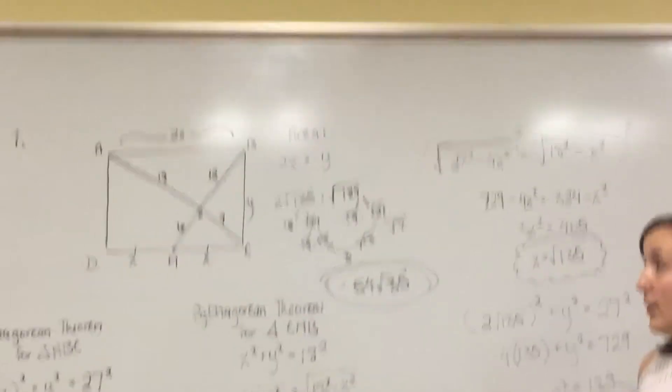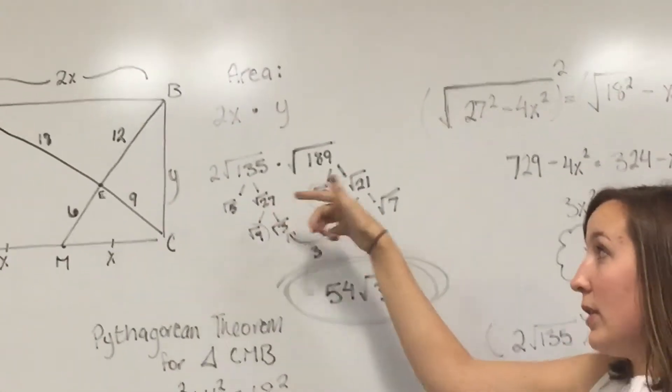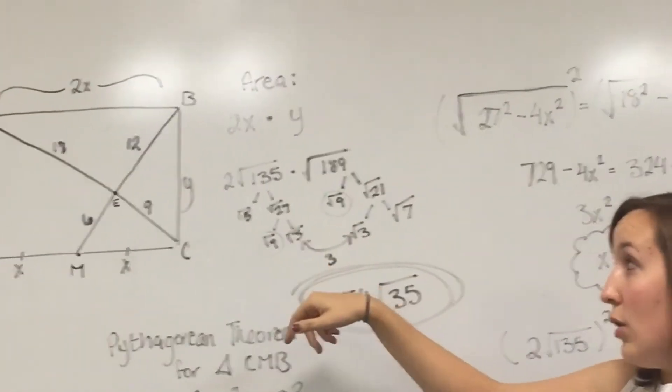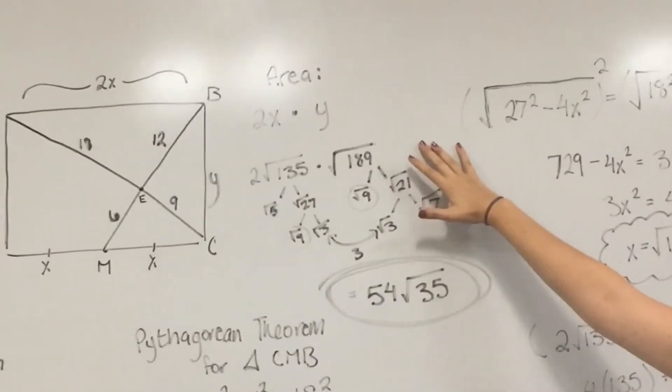So for mine, 135 splits into 5 and 27, and then you can split 27 up again into 9 and 3. So 9 itself just becomes 3.